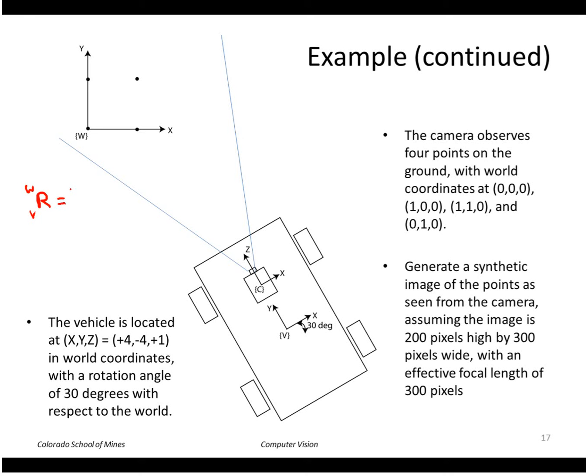So if I look at the rotation of the vehicle with respect to the world, I see it's just a rotation about the z-axis of the world. So I can write this as Rz of 30 degrees. And going back to the lecture on 3D rotations, you can see that this is a cosine of 30, a minus sine of 30, sine of 30, and cosine of 30.